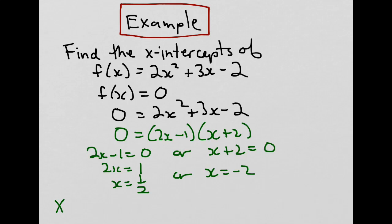Therefore, the x-intercepts are 1/2 and negative 2, or the points (1/2, 0) and (-2, 0).